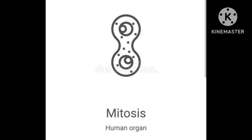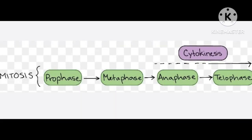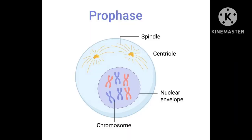Mitosis, or the M phase, can be defined as the continuous process whereby the nucleus of a cell divides to produce two daughter nuclei. The breakdown of a nucleus into daughter nuclei is also known as karyokinesis. The process of mitosis consists of four distinct phases: prophase, metaphase, anaphase, and lastly telophase.